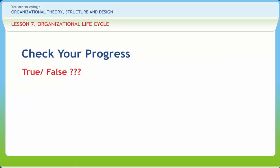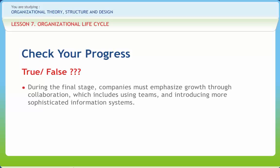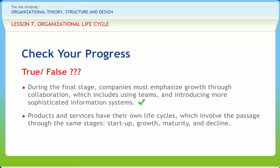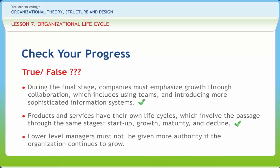If you have understood the various concepts discussed in this lesson, consider the following questions. During the final stage, companies must emphasize growth through collaboration, which includes using teams and introducing more sophisticated information systems — right or wrong? Right. Products and services have their own life cycles which involve the passage through the same stages: startup, growth, maturity, and decline — right or wrong? Right. Lower level managers must not be given more authority if the organization is to continue to grow — right or wrong? Wrong.